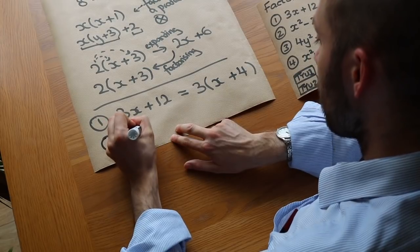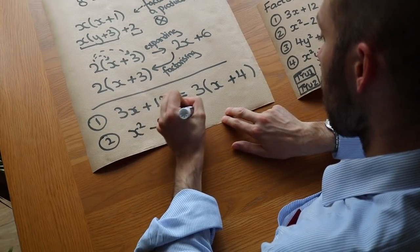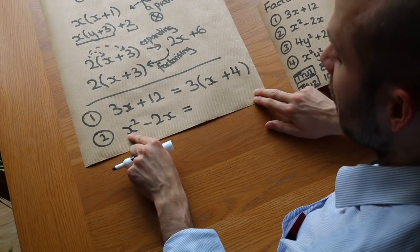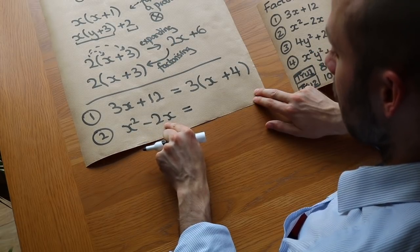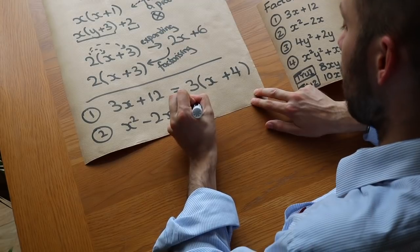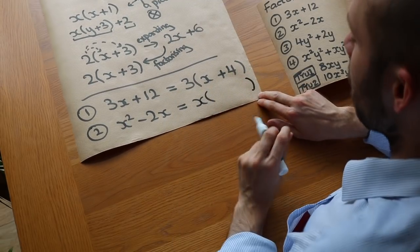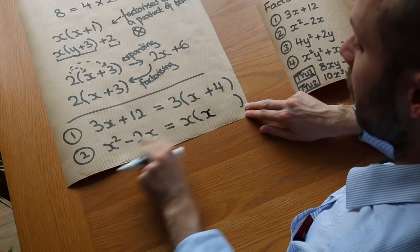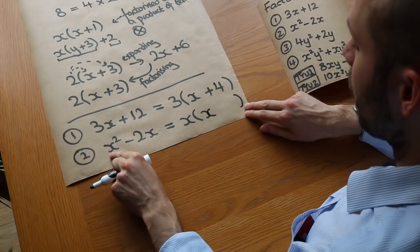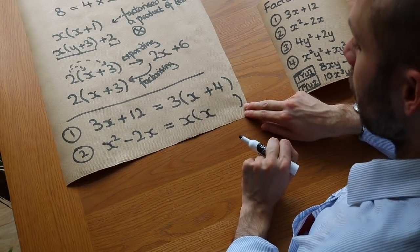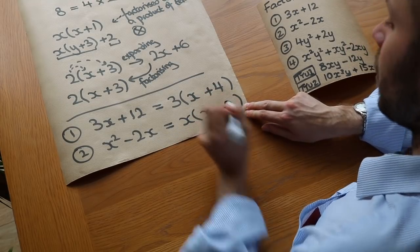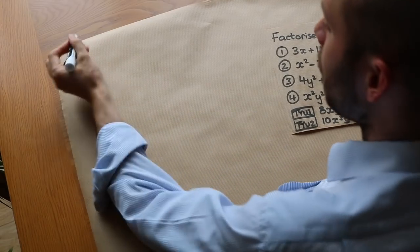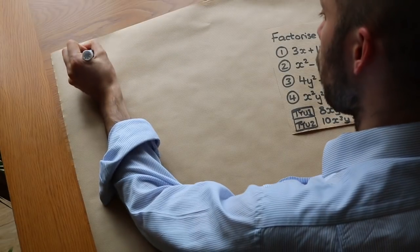Another example: X²−2X. What's common to both terms? They both have an X in common — X² is X times X, and −2X is −2 times X. So we take the X out of the bracket. Then X times what gives X²? That's X. And X times what gives −2X? That's −2. So the complete factorization is X(X−2).